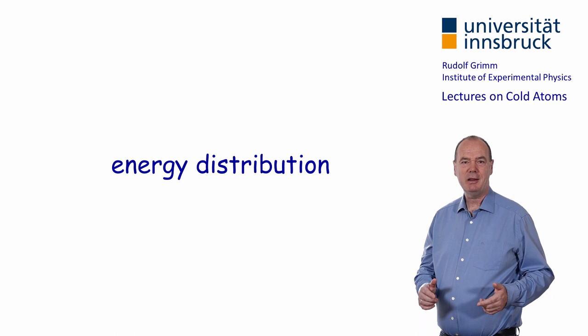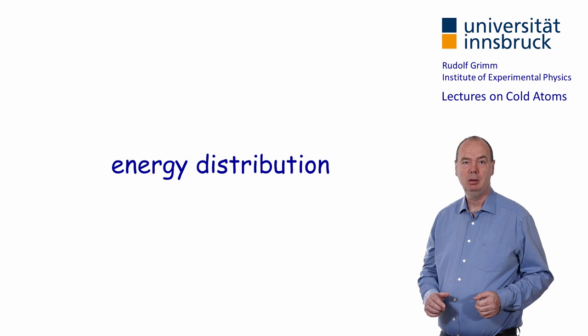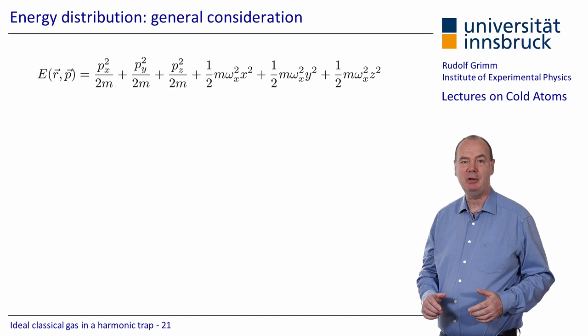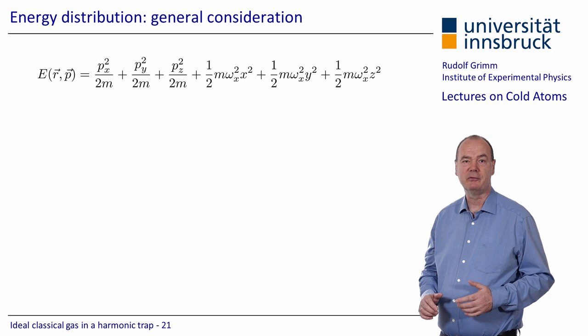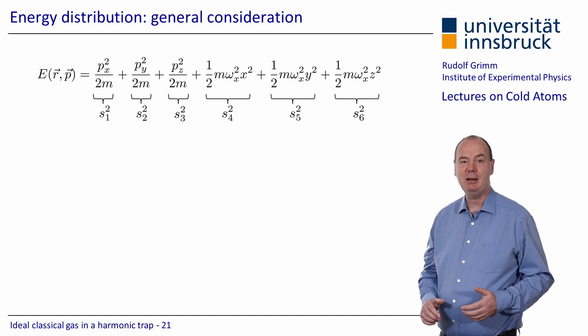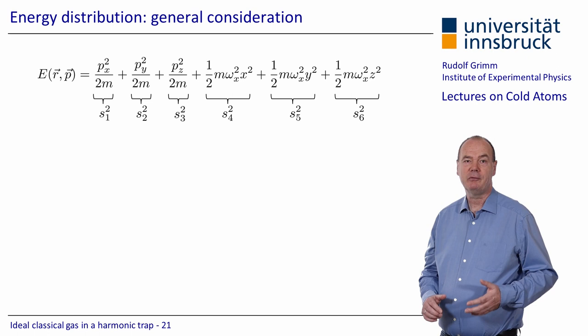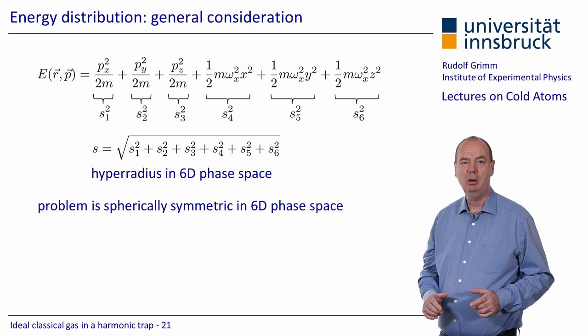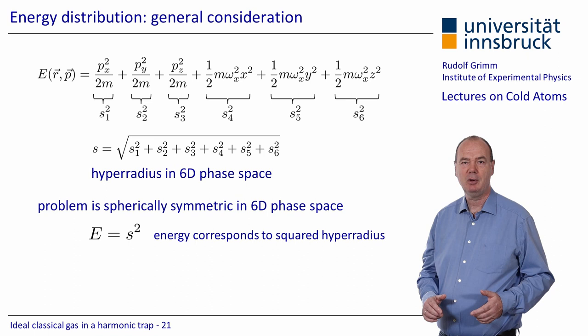There is another very important distribution: the energy distribution, which we can derive from the phase space distribution. For a harmonic trap, the energy is given by a sum of six terms proportional to the squares of the six phase space coordinates. For convenience, we define six corresponding coordinates S_1 to S_6, the squares of which have the dimension of energy, and define a hyper radius in 6D phase space. With this definition, one sees a wonderful hyperspherical symmetry in phase space, and the energy is simply the squared hyper radius.